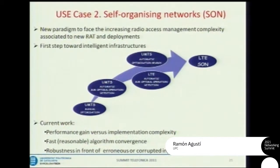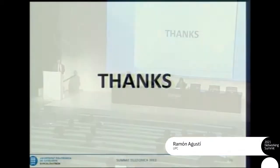To conclude: in both use cases we are using offline intelligence — the algorithms are not running online but offline. By using this kind of self-organizing network approach — optimizing the network rather than exploiting worst-case assumptions — you can reduce CAPEX. By almost eliminating manual operation and parameter tuning, you can certainly reduce OPEX as well. Thank you.